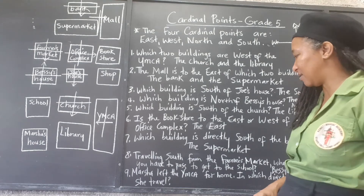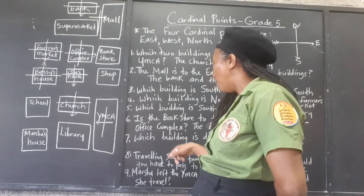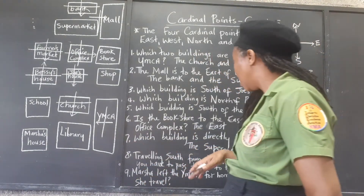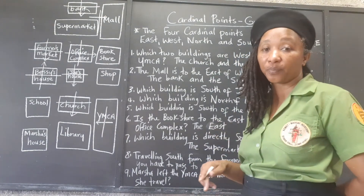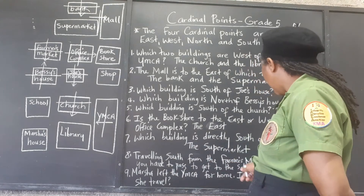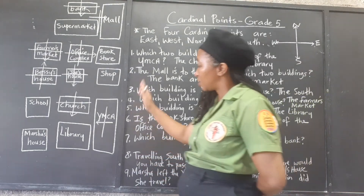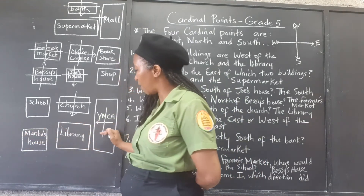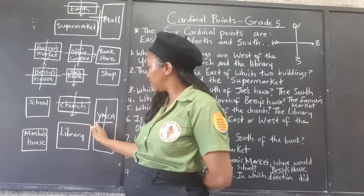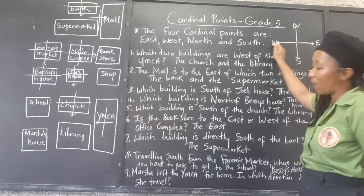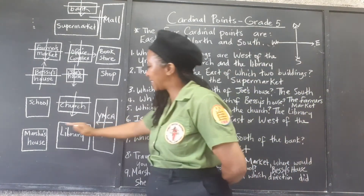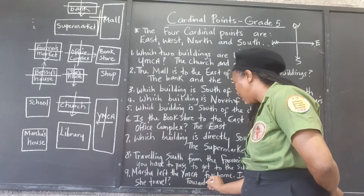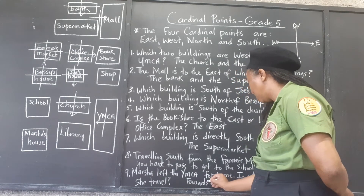And our last question: Marsha left the YMCA — maybe she went to do some swimming or play tennis — she left the YMCA and she's going home. In which direction did she travel? From the YMCA to Marsha's house, Marsha's house is in that direction from the YMCA. Which direction is that? That's west. She had to travel west to get to her house.